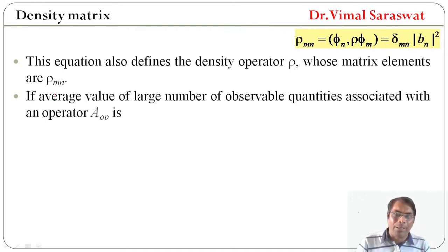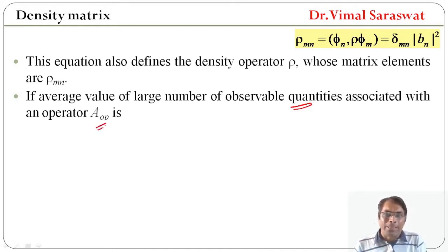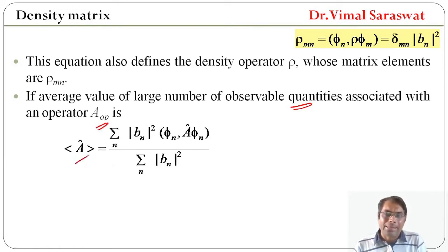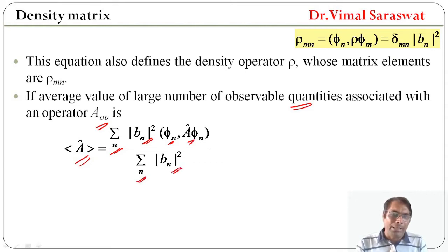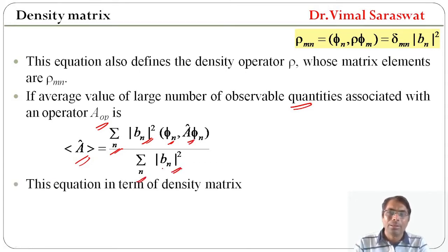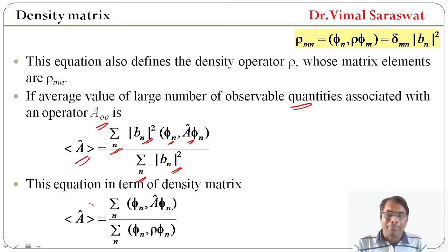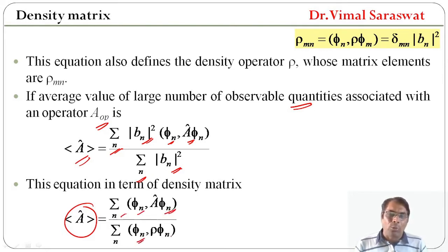If the average value of a large number of observable quantities is associated with an operator A, then the ensemble average of A, or expectation value of A, is equal to sigma_n |b_n|^2 <phi_n | A | phi_n> divided by sigma_n |b_n|^2. This equation in terms of density matrix is given by the ensemble average of A equal to sigma_n <phi_n | A | phi_n> divided by sigma_n <phi_n | rho | phi_n>.